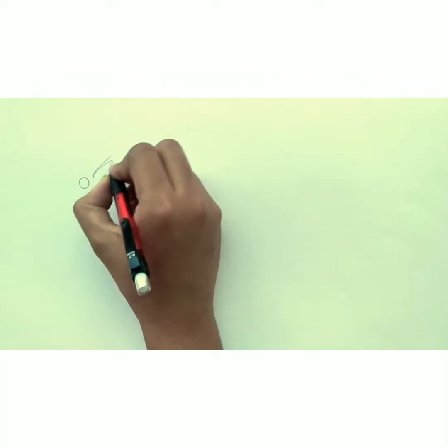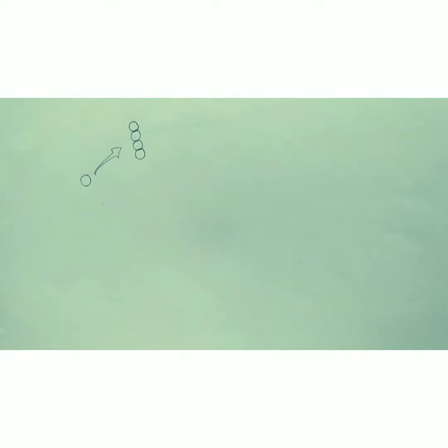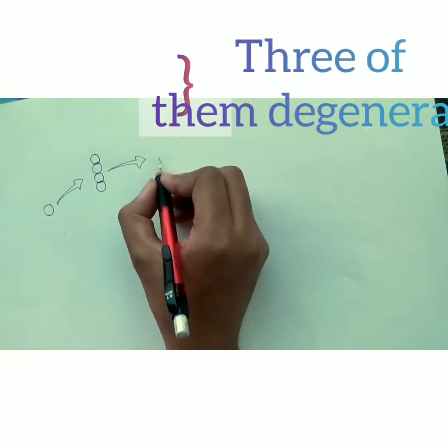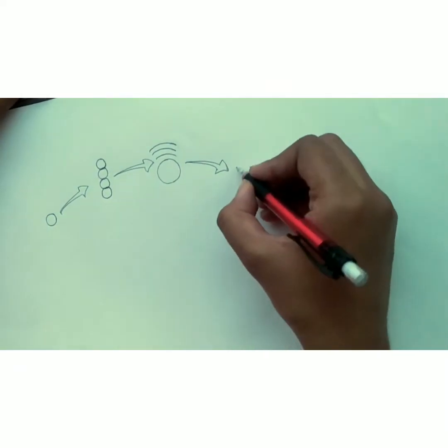The diploid megaspore mother cell undergoes meiosis to form linear tetrad of haploid cells, i.e., megaspore. Upper three megaspores degenerate and lowest one towards the center of the nucellus remains functional.